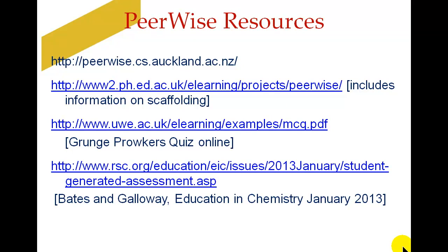So these are some of the resources — this is mainly for online. The PeerWise website itself. The physicists up at Edinburgh have done some cracking stuff on scaffolding and how to introduce PeerWise. One of the links is towards a quiz that was deemed by some students the best test they'd ever done, and it was amazing how many of them got full marks once they worked out the secrets. And then there's an Education in Chemistry article written by two physicists, curiously enough, on PeerWise, from which the cartoon comes.